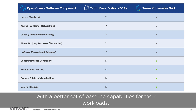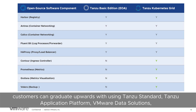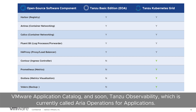With a better set of baseline capabilities for their workloads, customers can graduate upwards with using Tanzu Standard, Tanzu Application Platform, VMware Data Solutions, VMware Application Catalog, and soon Tanzu Observability, which is now called ARIA Operations for Applications.